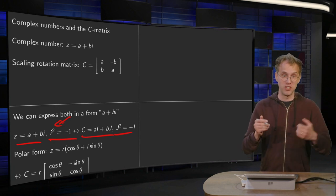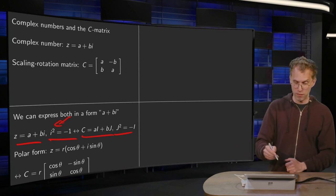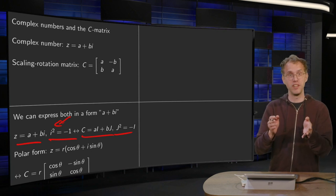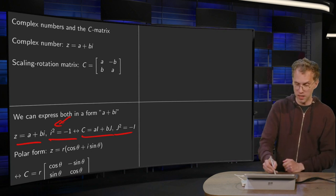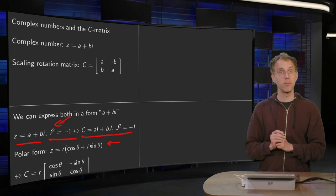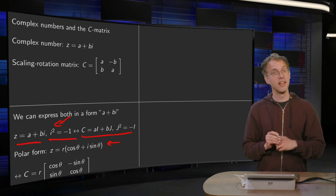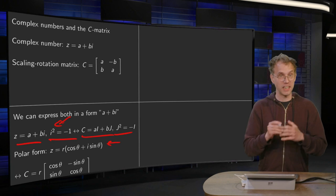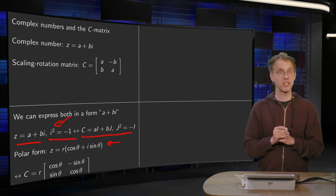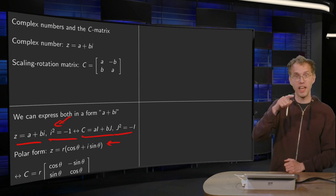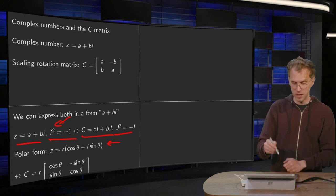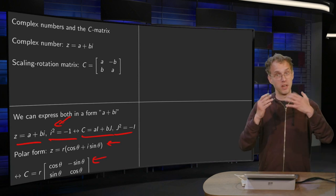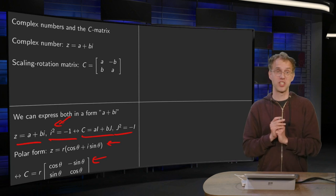And there's more. You can write a complex number z in its polar form. Then a equals r cosine theta and b equals r sine theta — that is the polar form of a complex number z. And you can do exactly the same for the scaling rotation matrix C: just write a equals r cosine theta and b equals r sine theta, and there you have your scaling rotation matrix C.